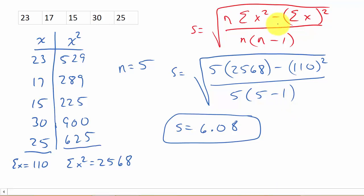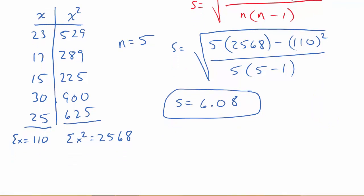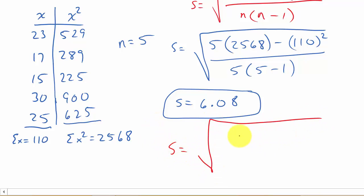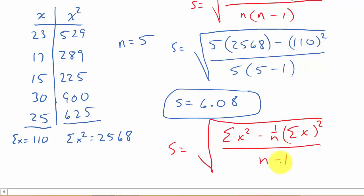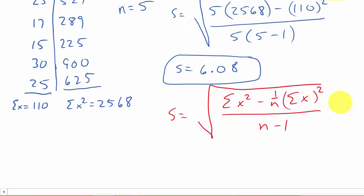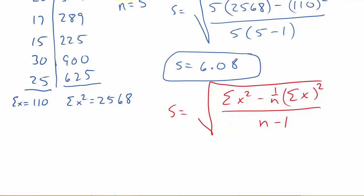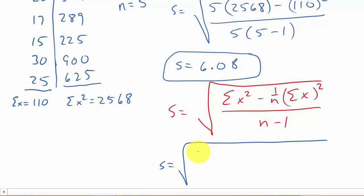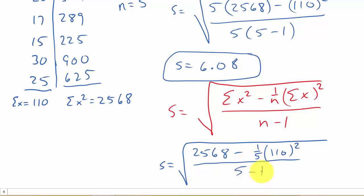That's using the first formula. If we use the other formula — S equals the square root of the sum of X squared minus 1 over N times the sum of X squared, over N minus 1 — you'll get the same answer. It looks like: square root of 2,568 minus one-fifth times 110 squared, over 5 minus 1. You'll get the same answer: 6.08.